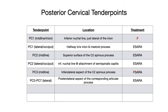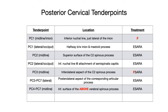From PC3 to PC7, all lateral, they are located on the posterior lateral aspect of the corresponding articular process. The treatment for all of these lateral PC tender points is E-CERA. PC4 to PC7 midline is located on the inferior surface of the above vertebral spinous process, and the treatment is E-CERA. It's very important to remember that PC4 to PC7 midline is on the vertebrae above the number of the tender point you're looking at — that's a very high yield relationship.